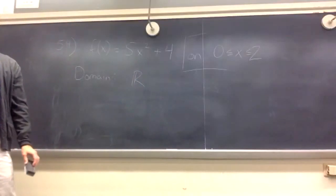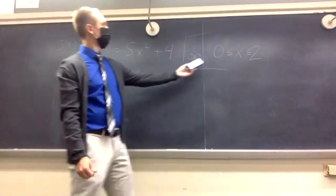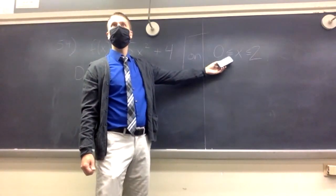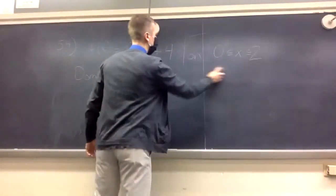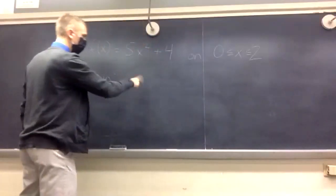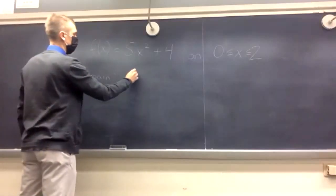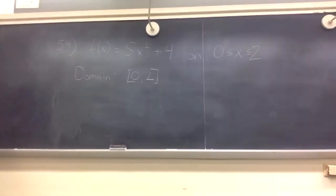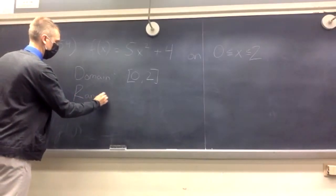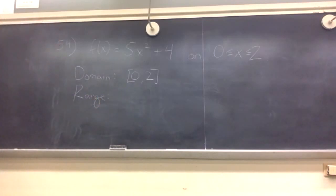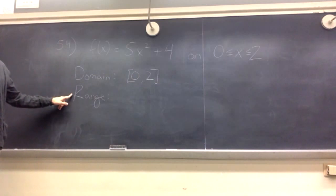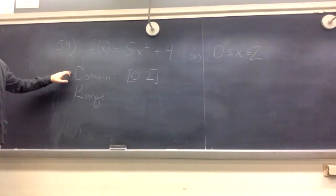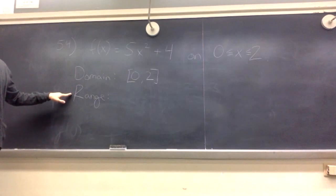But in this problem they give you a restriction: the function is only on the numbers from 0 to 2. So the domain isn't all real numbers — it's that little section they restrict us to: 0 to 2. The second part is a little harder: range. Range is the possible outputs. If you're looking at a graph, the domain is the x-values you can plug in, and the range is the y-values you can get. This one's a little harder because we need to actually look at the function and ask ourselves how small can that be and how big can that be.